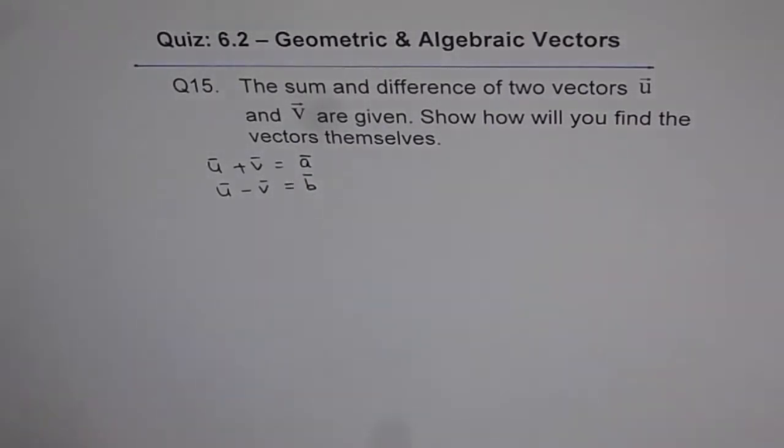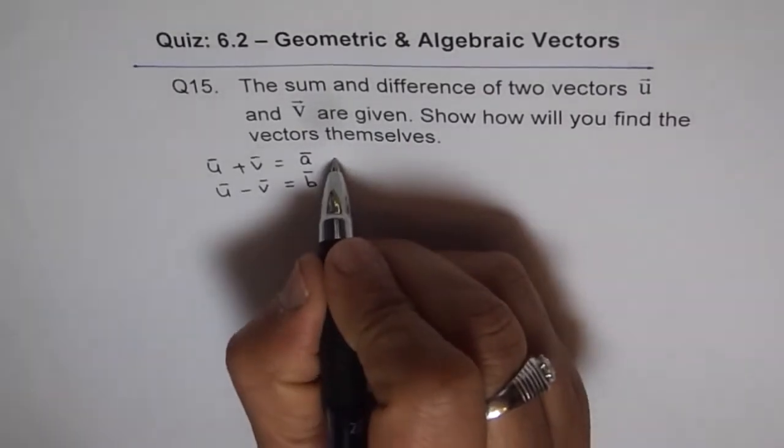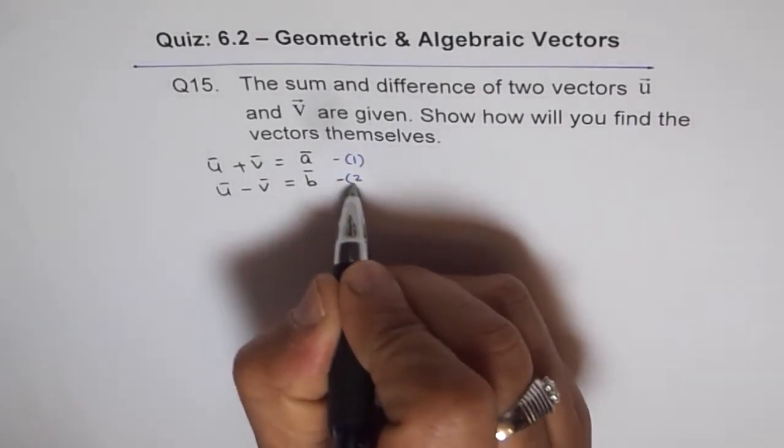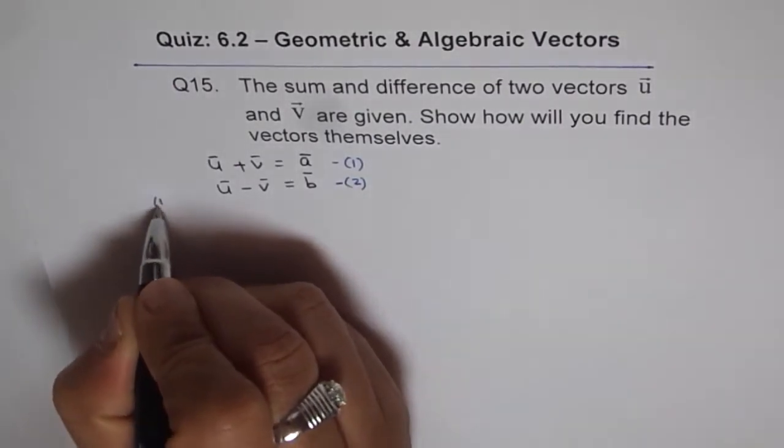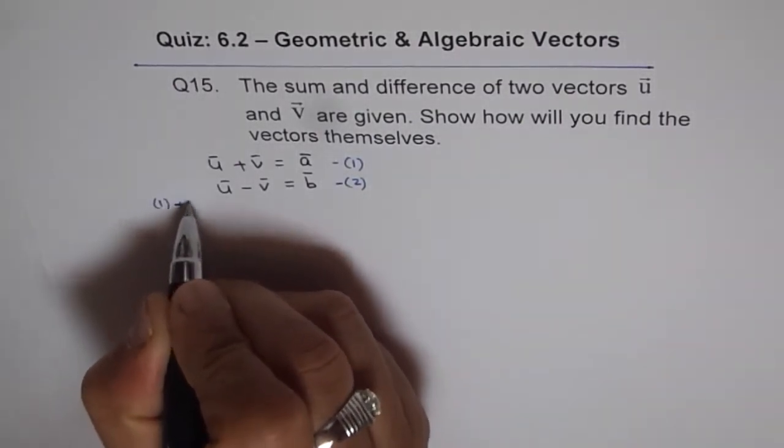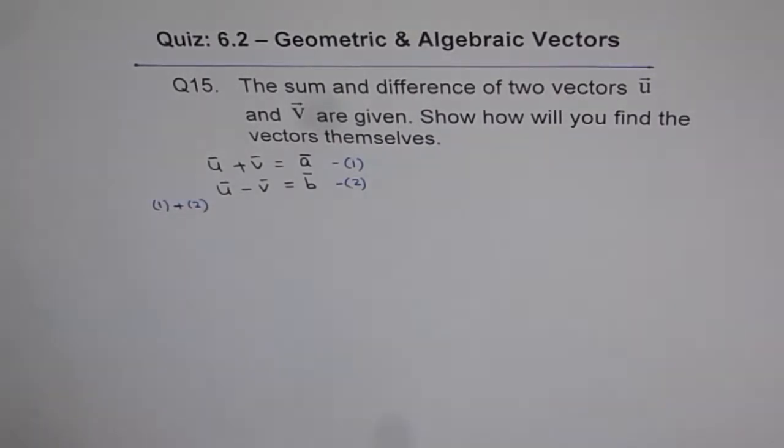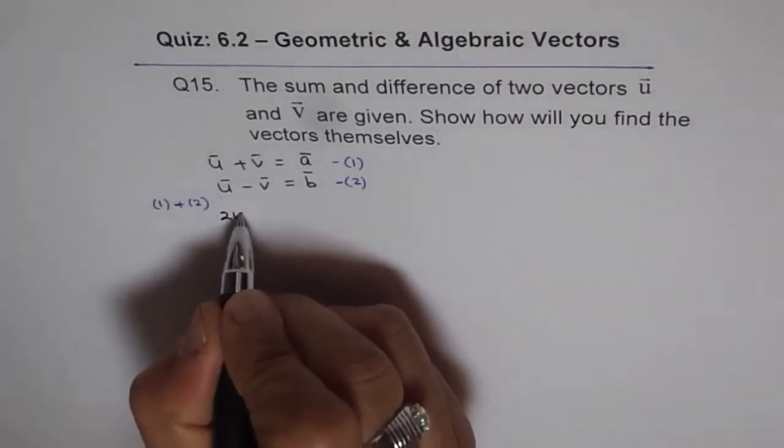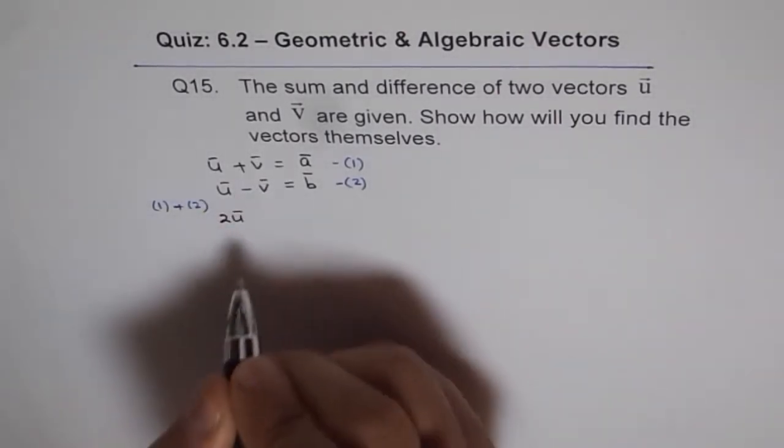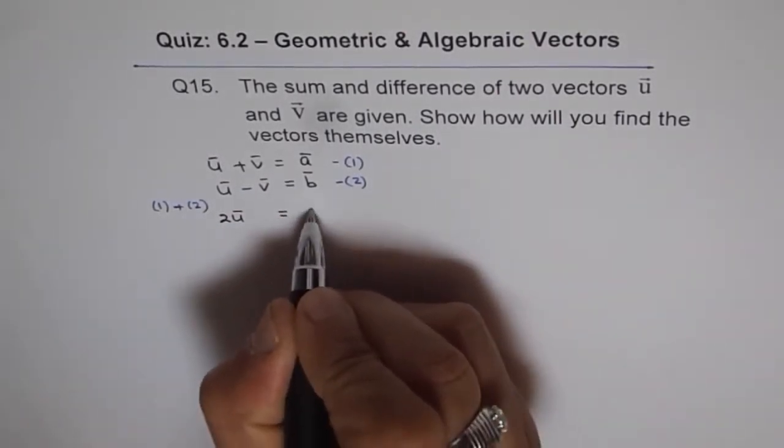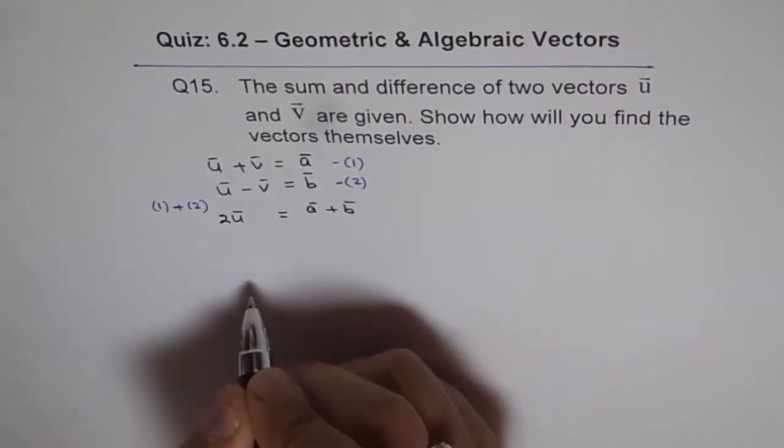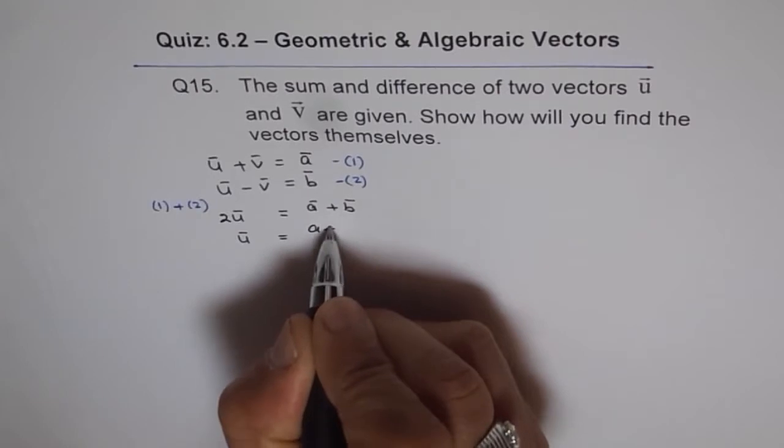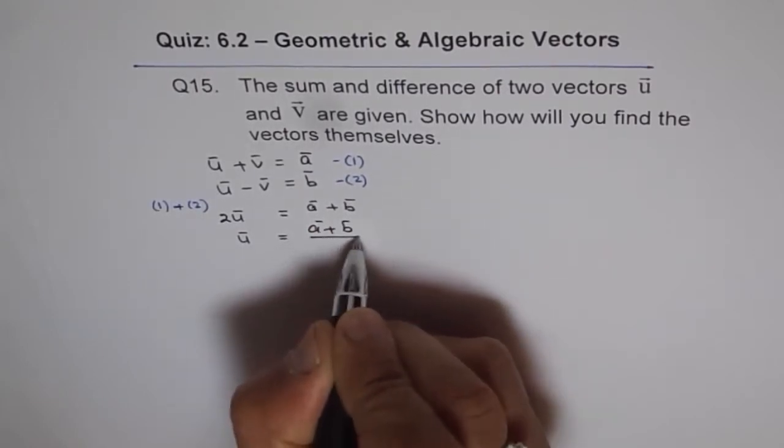One solution, which we did earlier, is we will give these equations numbers. Let this be equation one and this is equation two. Now what happens if I do equation one plus equation two? When I add them up, I get 2u and v minus v is zero, equals vector a plus b. Therefore I can say u equals a plus b divided by two.